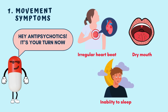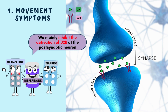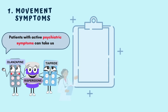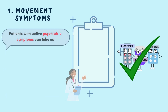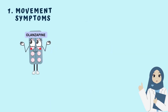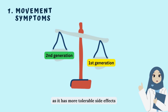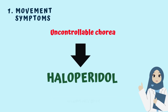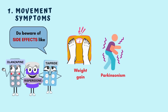Second-generation antipsychotics mainly inhibit activation of dopamine D2 receptors at post-synaptic neurons. Patients with active psychiatric symptoms such as depression, psychosis and aggressive behaviour can take them. Second-generation antipsychotics such as olanzapine, risperidone and tiapride are preferred over first-generation due to more tolerable side effects. However, in cases of uncontrollable chorea, the first-generation drug haloperidol is commonly given. Side effects include weight gain, Parkinsonism and sleepiness.